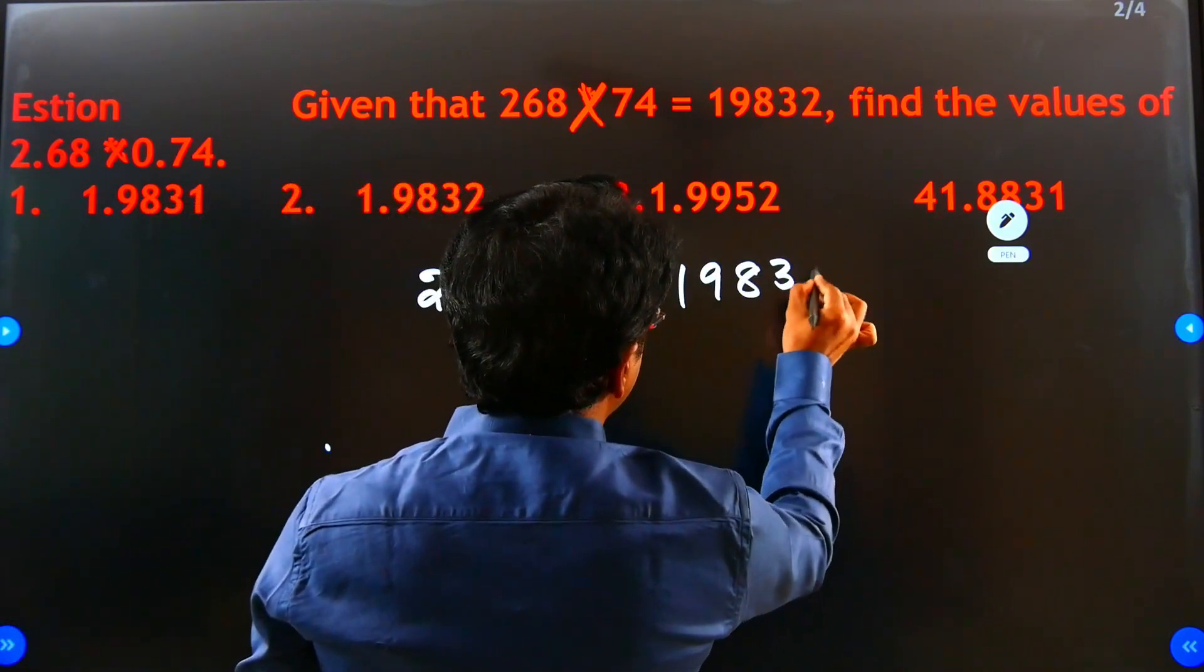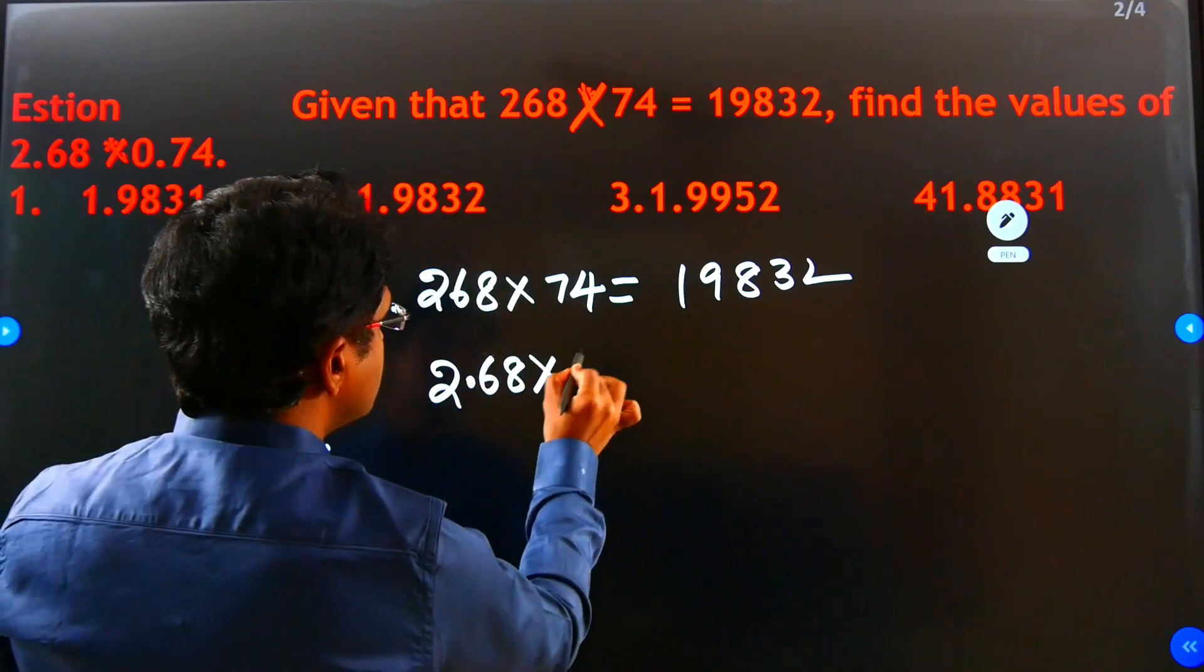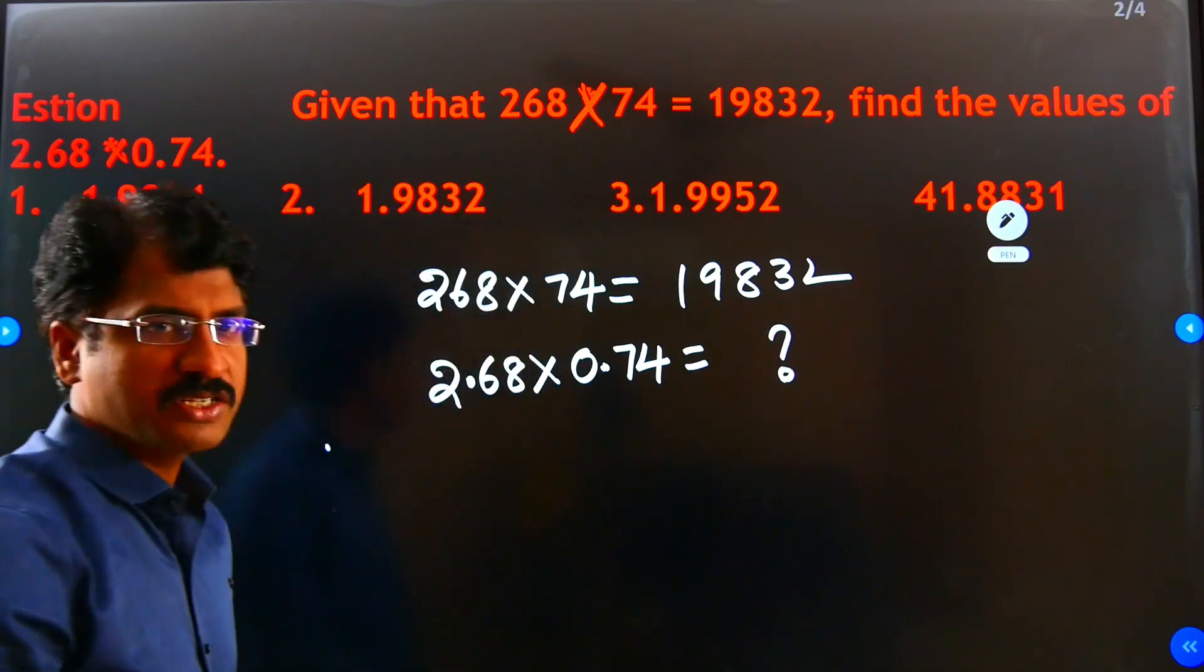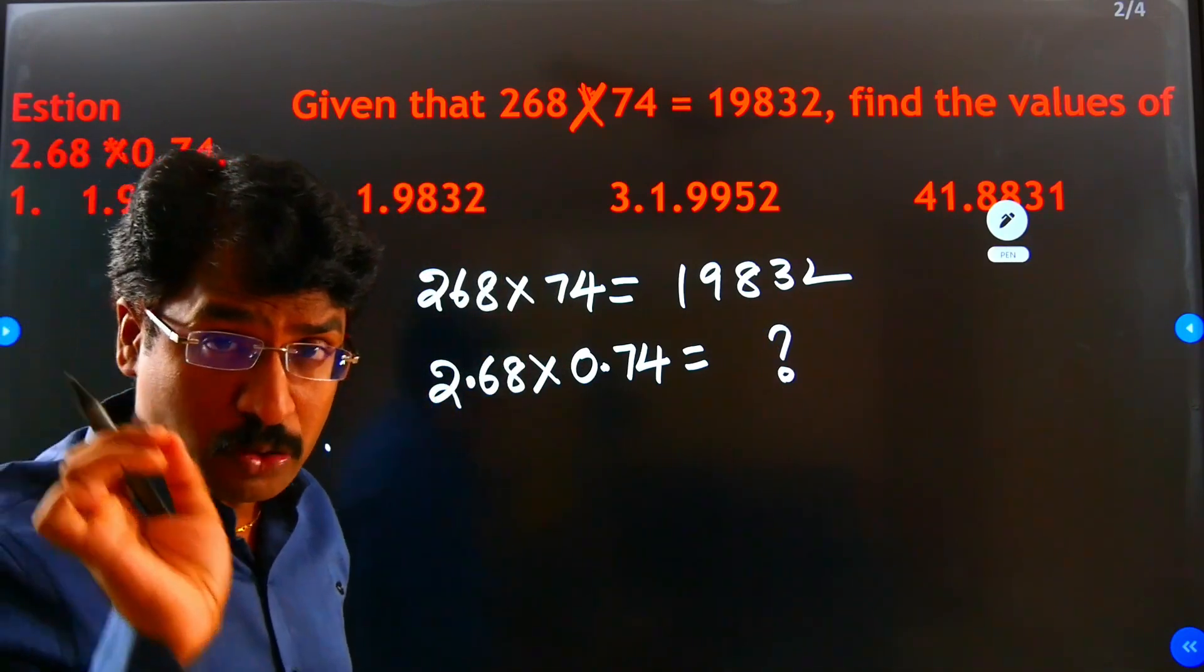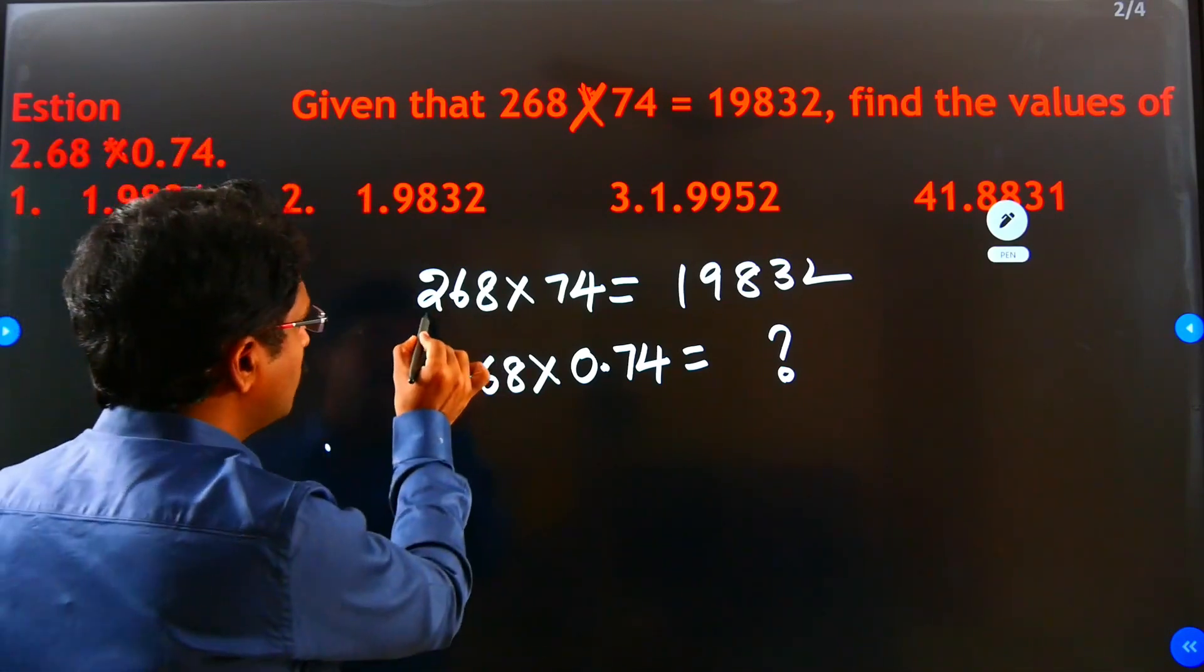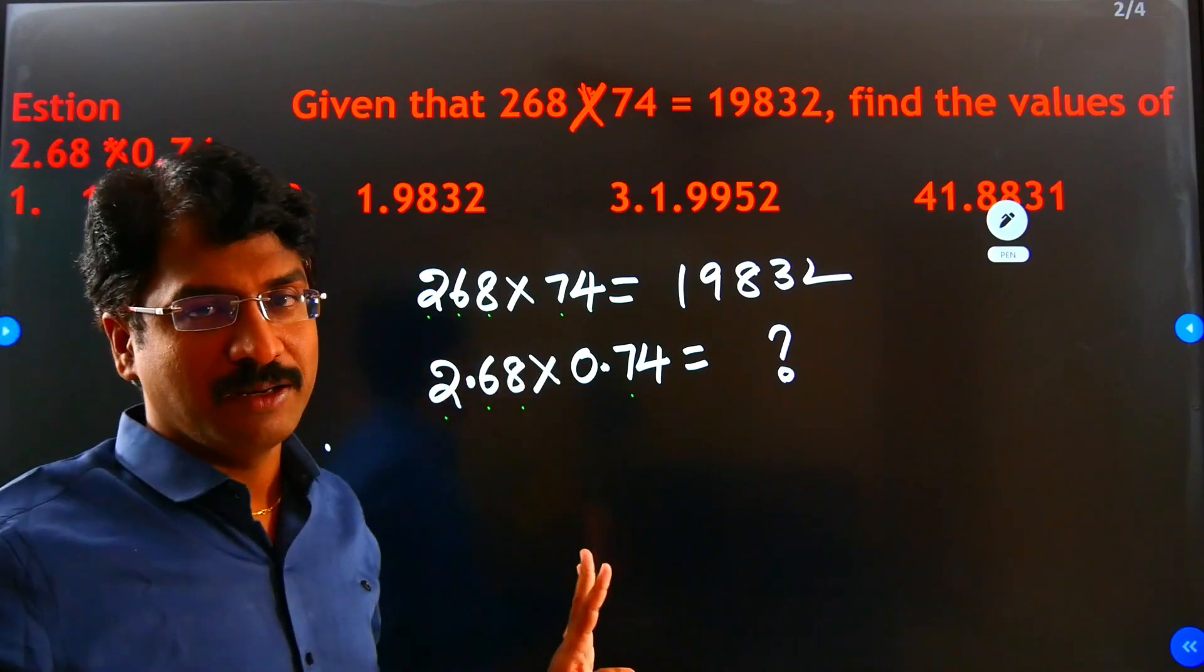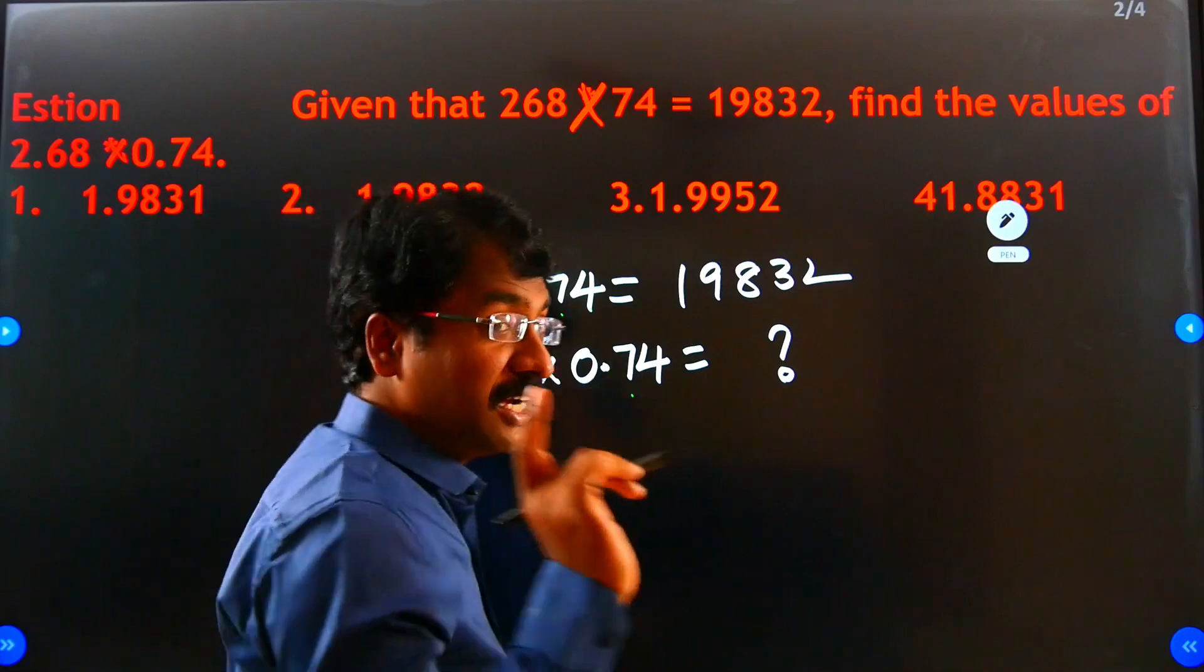Then 2.68 into 0.74, value, what is the value? My students, here if you observe for a few seconds, forget about the decimal. 268, 268, 74, 74. Forget about the decimal, that means both are same.